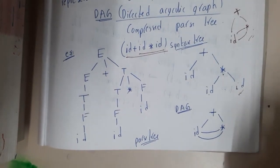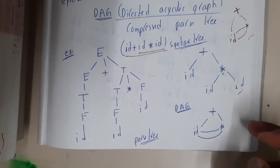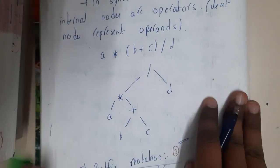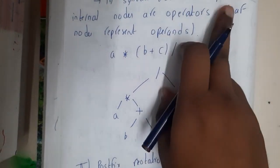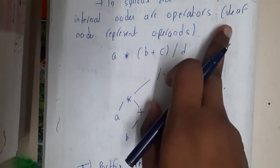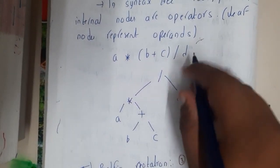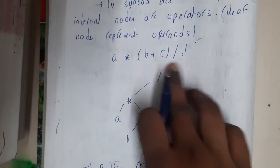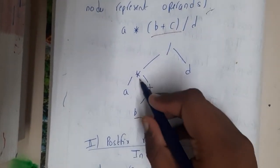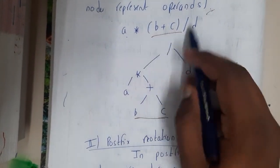This is one more example. In syntax tree, the root parent internal nodes are operators, leaf nodes are operands. So a into b plus c or T, initially b plus c is calculated, then into a is done, and then divided by d.